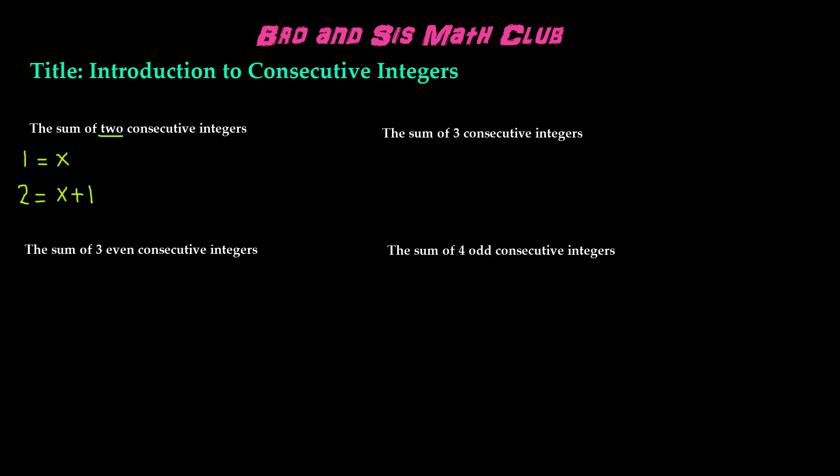The second one is the sum of three consecutive integers. Therefore, we will have first, second, and third. The first will be a variable. Let's say that this time we're using the variable n. We will have n, n plus 1, and n plus 2. This shows the sum of three consecutive integers.